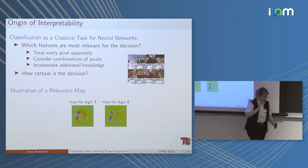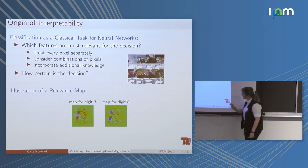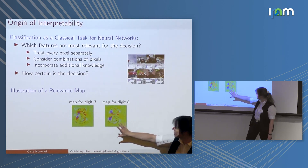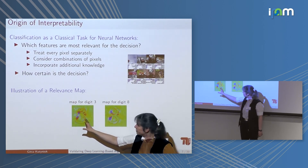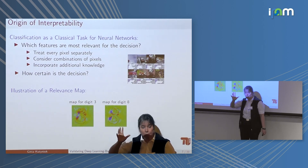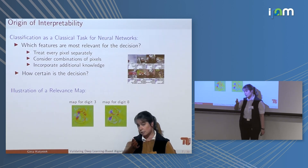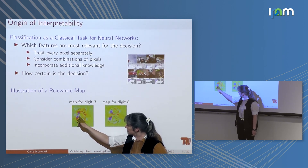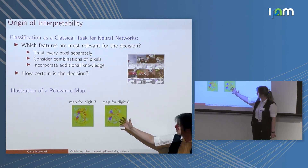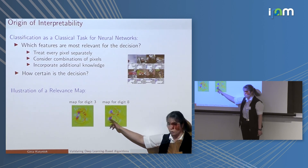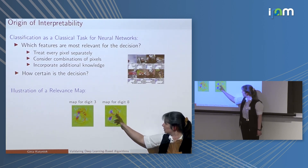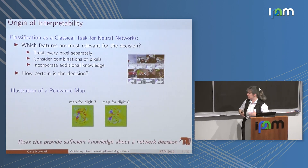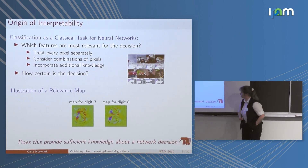Algorithms are typically in the first range — treating pixels separately and putting a heat map on them. We saw such images in Klaus's talk. Roughly speaking, if you would like to classify a digit as a three, these are typically called relevance maps — each pixel has a color and the more red it is the more relevant it is for the decision. For classifying as a three, areas that are open distinguish it from an eight. But one has to ask: is this sufficient knowledge about a network decision?